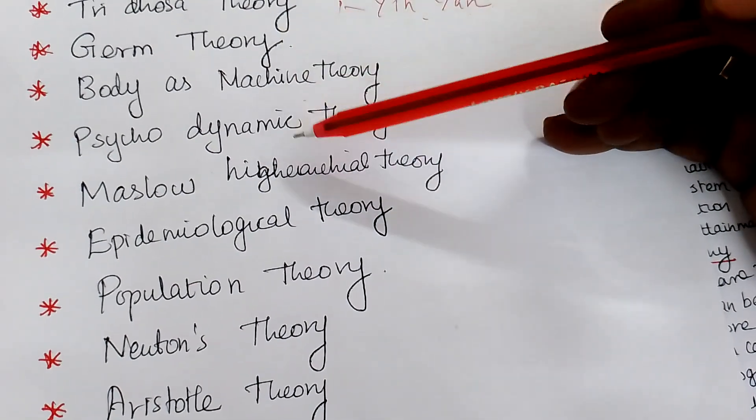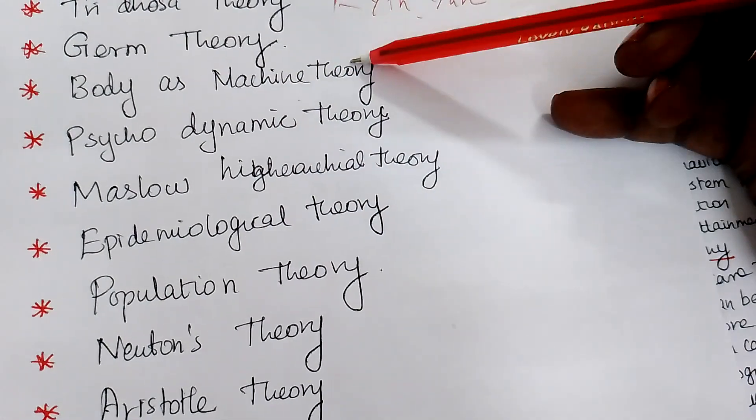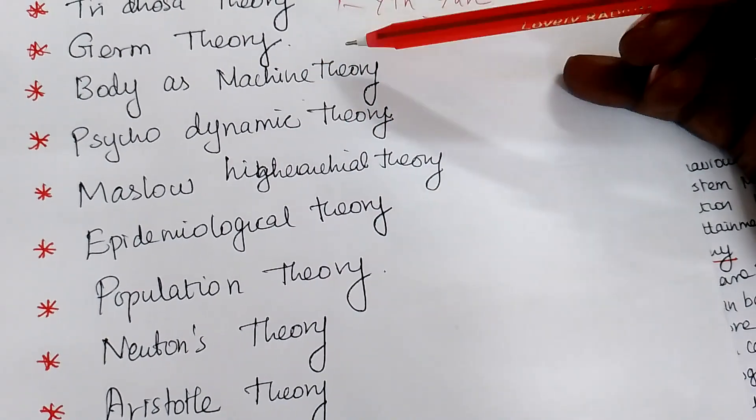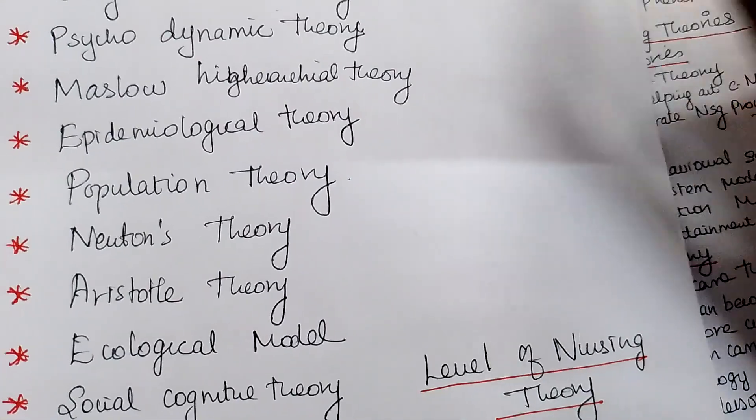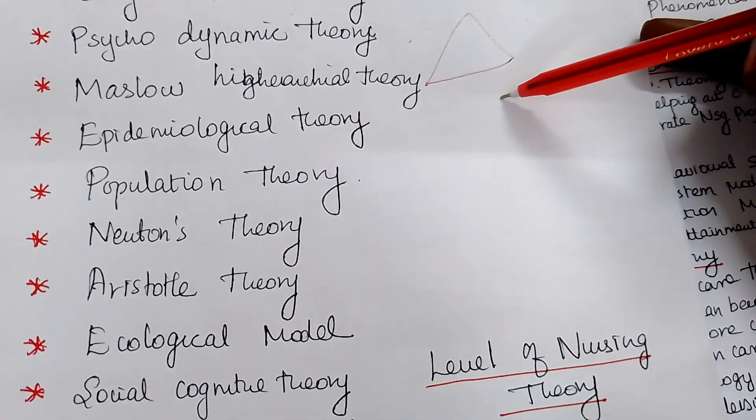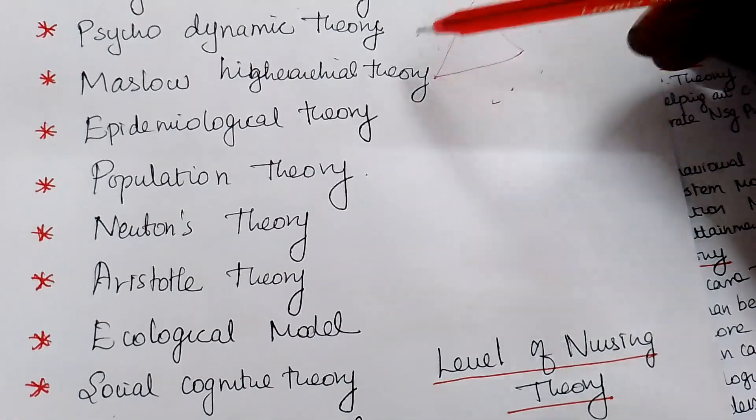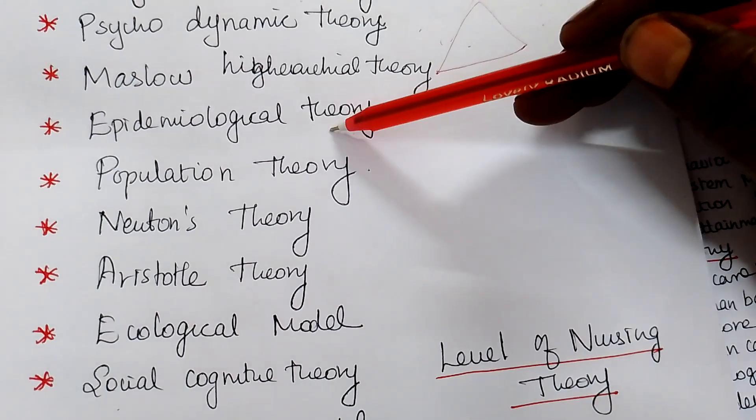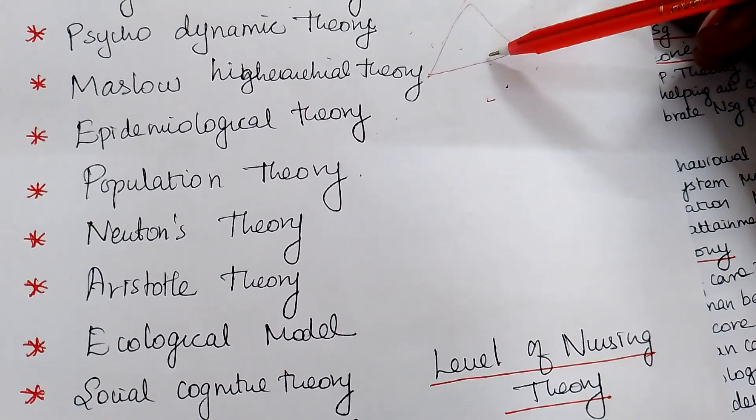They developed a psychodynamic theory afterwards. Some people told, body is a machine theory. Body is a machine. It is like a machine. It will function when it is fuel. Anything damage, anything, you may get a disease. Right? Then some people told, epidemiological theory. The disease are coming by the agent, host and environment. There is a relationship between agent, host and environment. Anything going wrong, you may get a disease. It is an epidemiological phenomenon of the disease. The theory, their theory, they develop it.